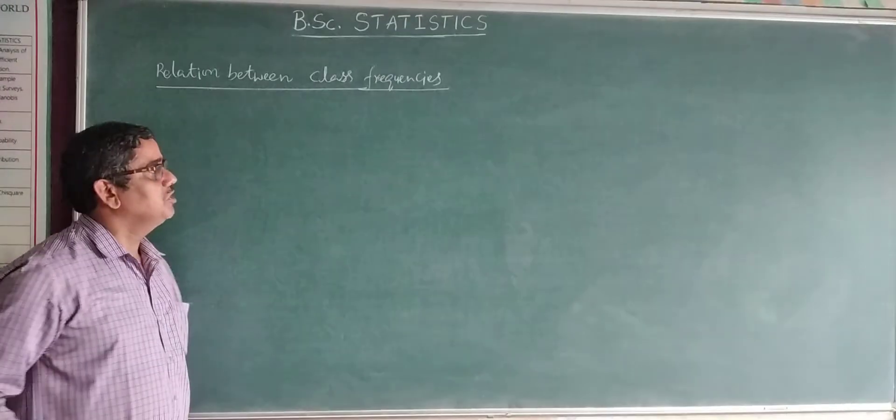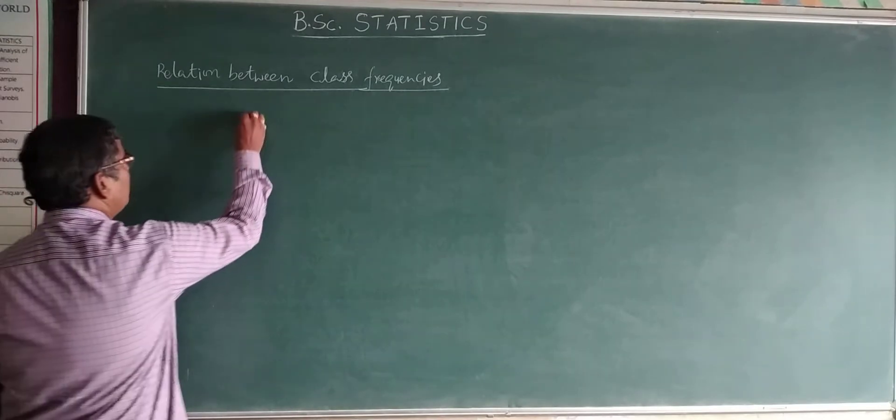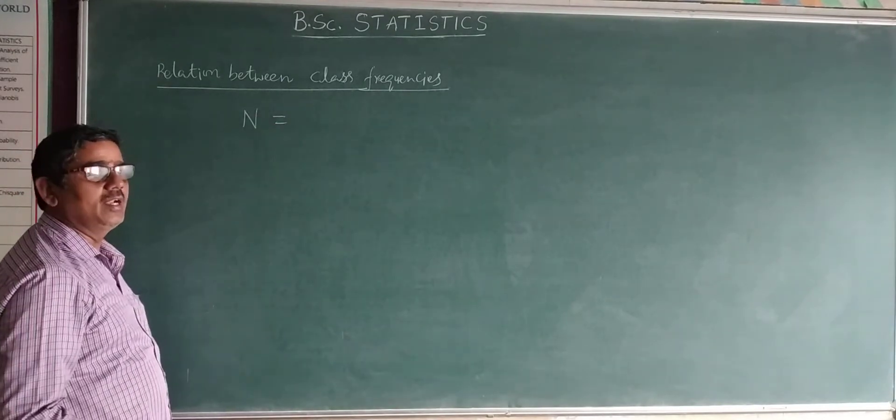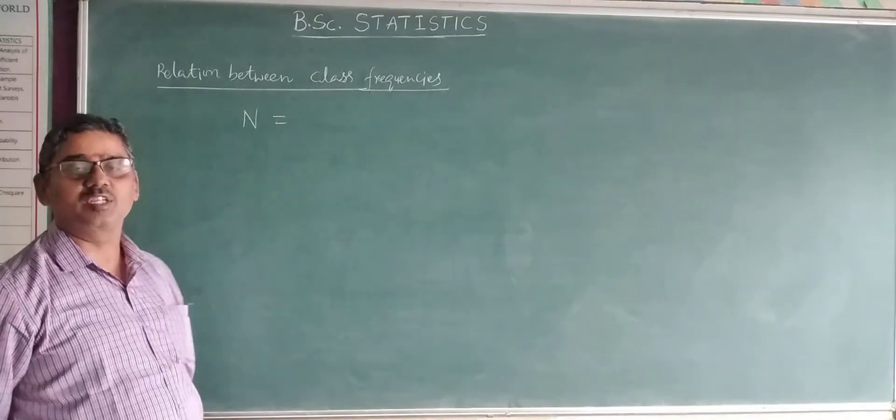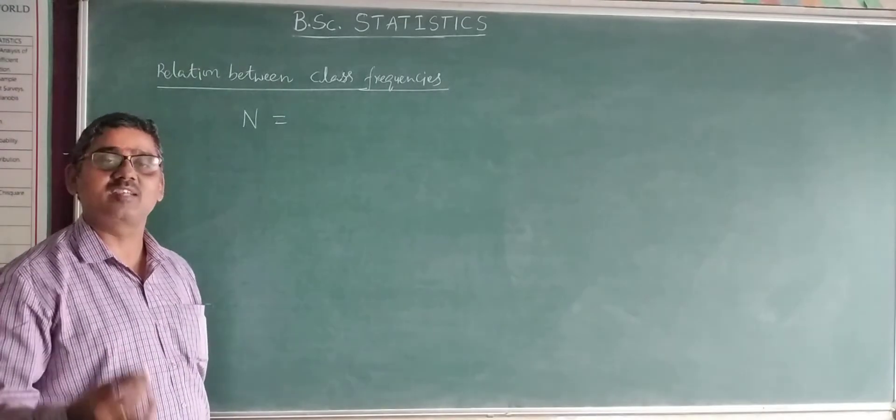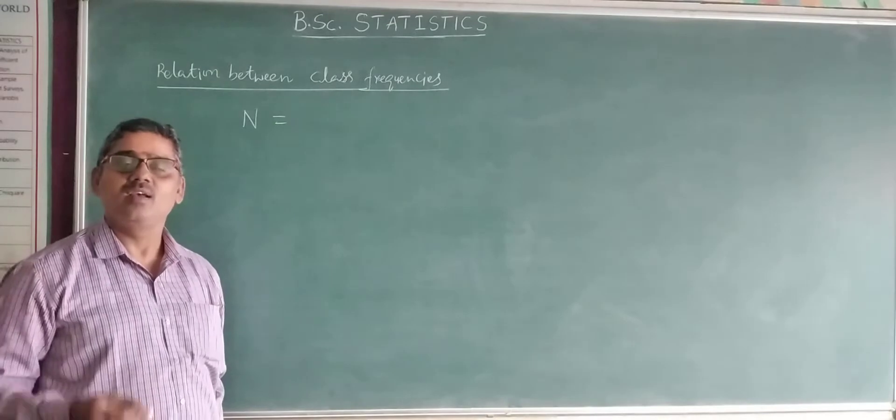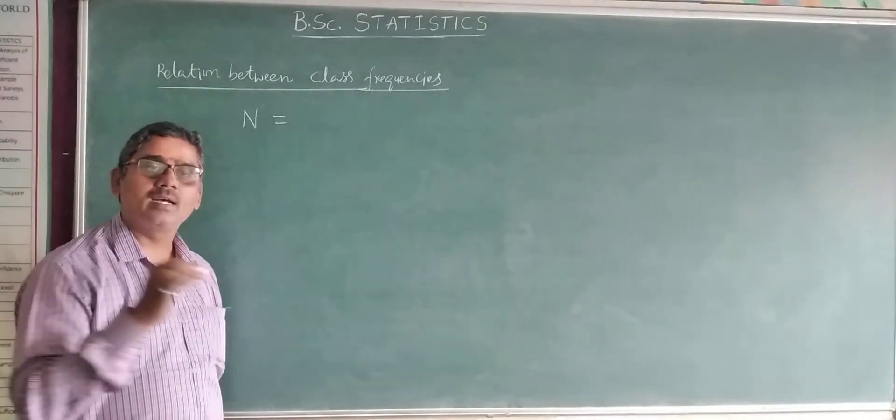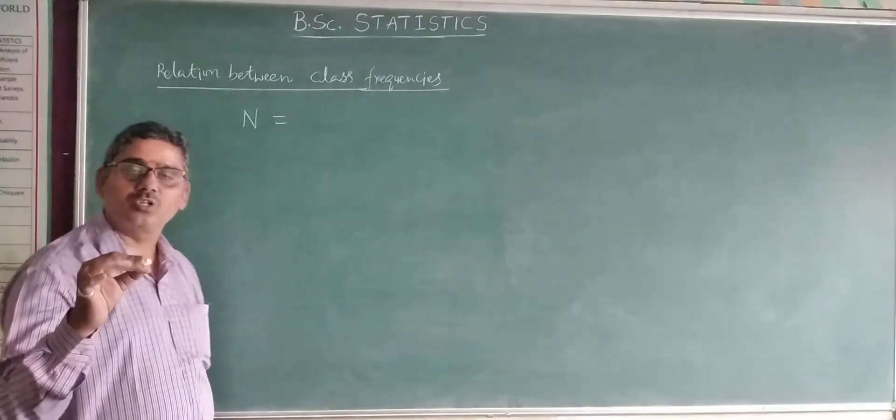For example, if you want to express what is n, in dichotomous classification, n can be expressed as A positive plus alpha negative. If you add those two, then you will get n. I give you an example so that you can understand.